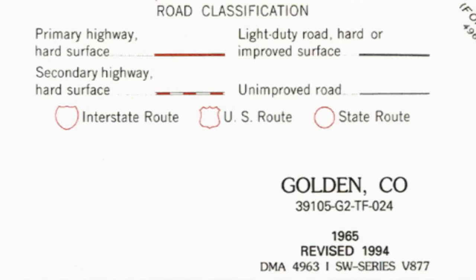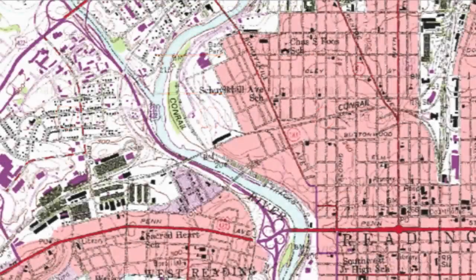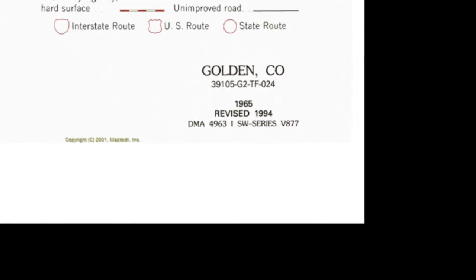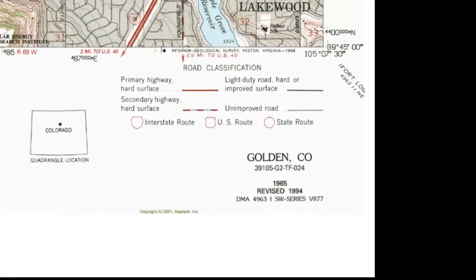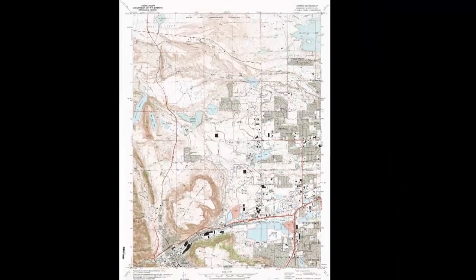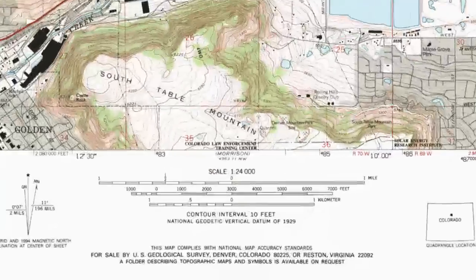At the bottom right we will find the publication date and the date of the last revision. Many of these maps will color all changes since the last revision in purple, which is a quick and easy way to see cultural or geologic changes in an area during that period of time. In our following episodes we will look at each of these map components in more detail, starting with scale.